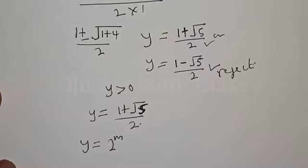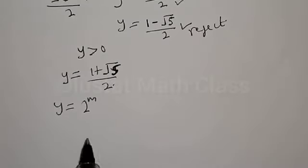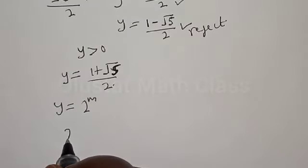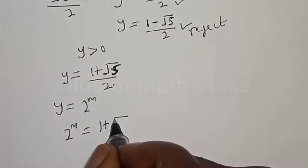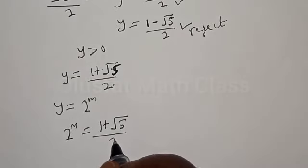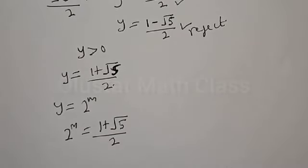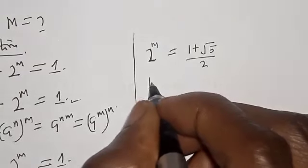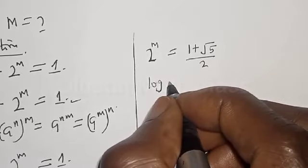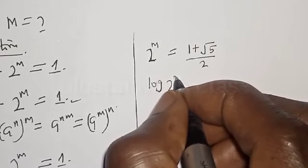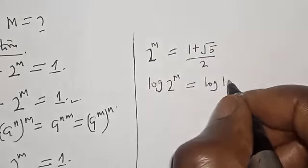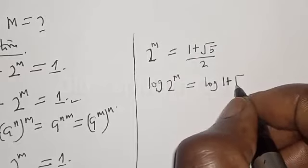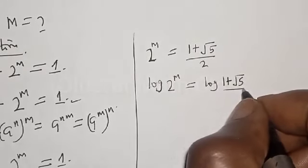Therefore, our equation becomes 2 raised to power m equal to 1 plus square root of 5 divided by 2. Let's take the log of both sides. Therefore, we have log 2 raised to power m equal to log of 1 plus root 5 divided by 2.